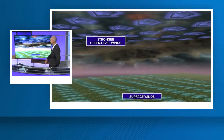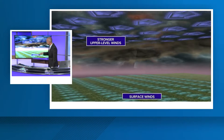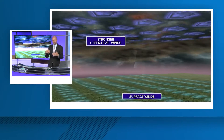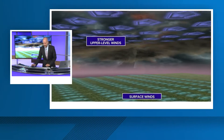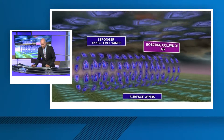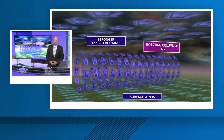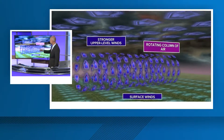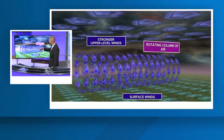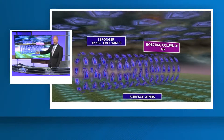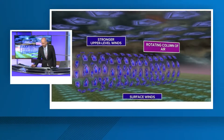How tornadoes typically form: we've got this diagram here. You've got strong winds aloft and at the surface, but they're coming from two different directions. What happens is you get these horizontal rolls. This happens a lot — any gusty, windy day, you're going to get one of these.